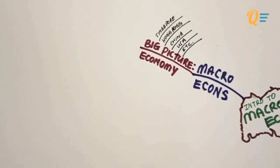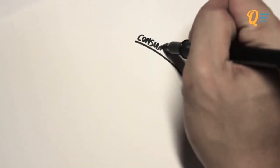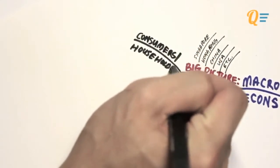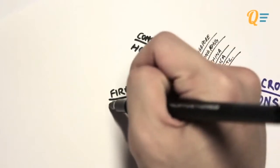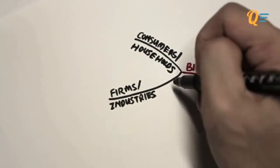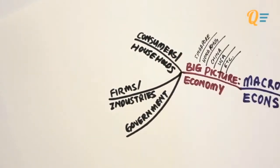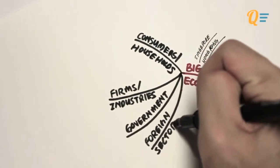Let's take a look at the different types of entities that make up the economy. The first one is your consumers, or what we call households — these are pretty much ordinary citizens of the economy, people like you and me. It's also made up of firms or industries, government bodies, and the foreign sector.